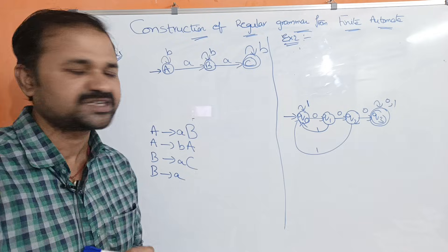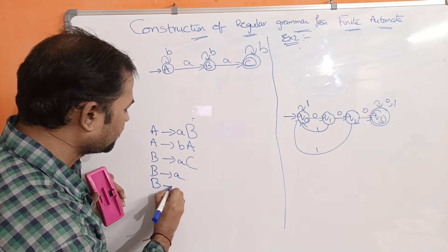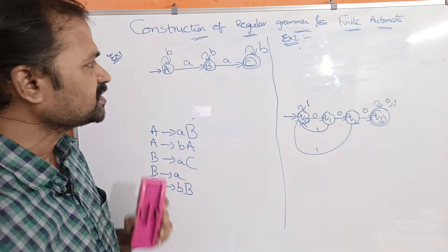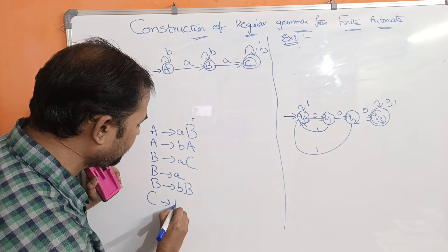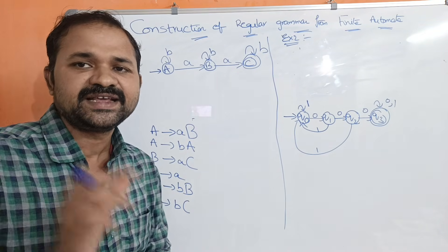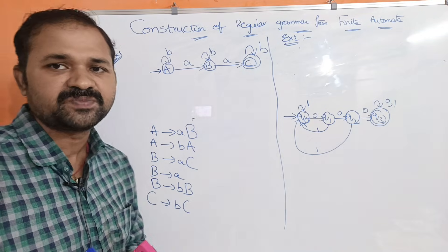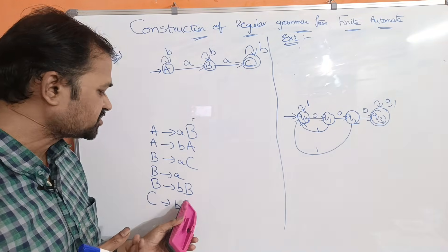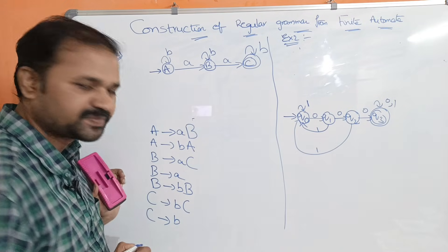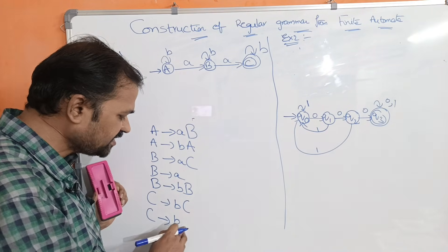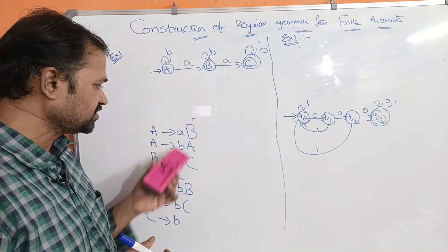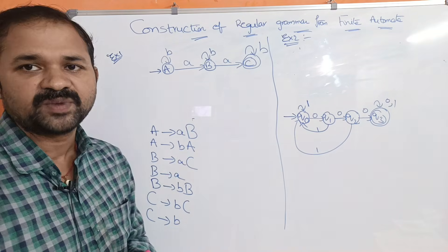Next, B on b goes to B, so we write B implies bB. Now focusing on state C: C on b goes to C, and C is the final state. When we reach a final state by applying an input symbol, we can write C implies bC and also C implies b — meaning by applying b on C we can reach the final state even without a following state.